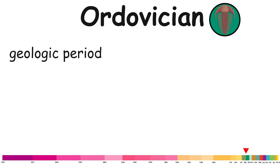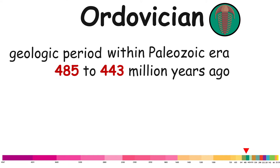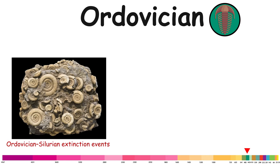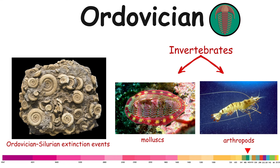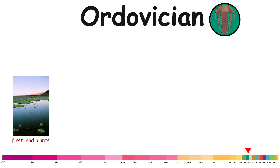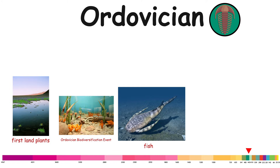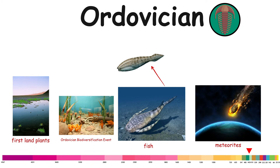Ordovician. The Ordovician is a geologic period within the Paleozoic era, spanning approximately from 485 to 443 million years ago. It consists of three epochs: Late, Middle, and Early. Life continued to flourish, although the end of the period was marked by the Ordovician-Silurian extinction events. Invertebrates, namely mollusks and arthropods, dominated the oceans, with arthropods probably starting to establish on land. The first land plants are known from this period. Fish, the world's first true vertebrates, continued to evolve, and those with jaws may have first appeared late in the period. About 100 times as many meteorites struck Earth per year during the Ordovician compared with today.